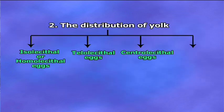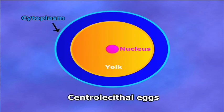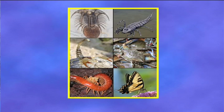Centrolacetal eggs: the quantity of yolk is huge and concentrated in the center of the egg. Cytoplasm is spread as a clear layer around the periphery of the yolk, and it contains the egg nucleus in the center of the egg. Examples are provided by the eggs of most arthropods.